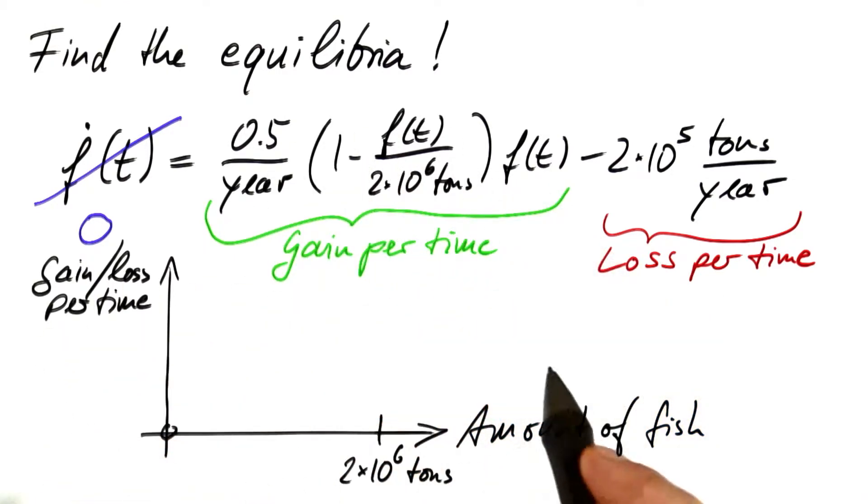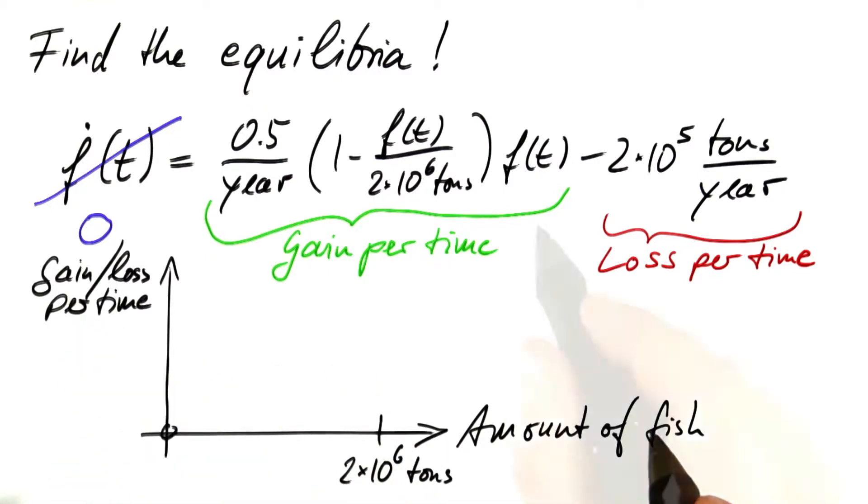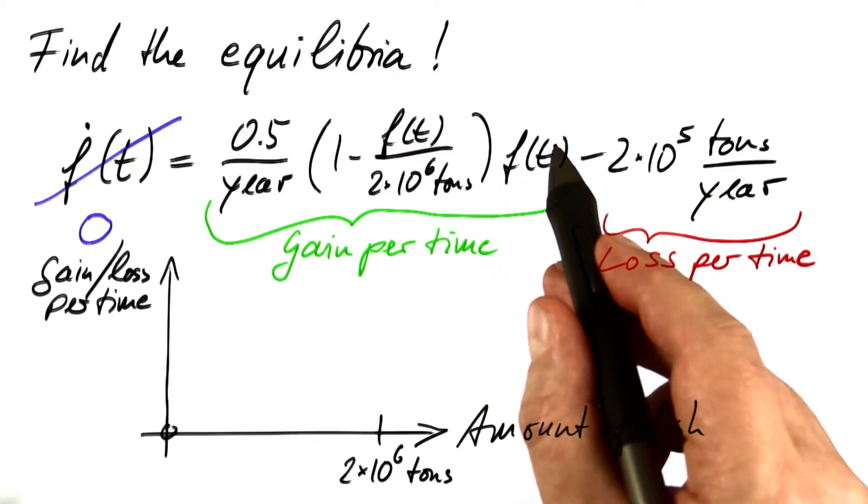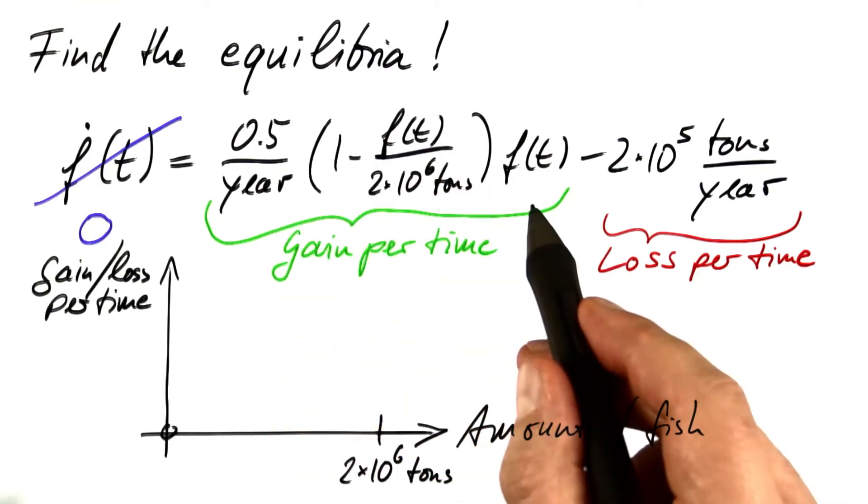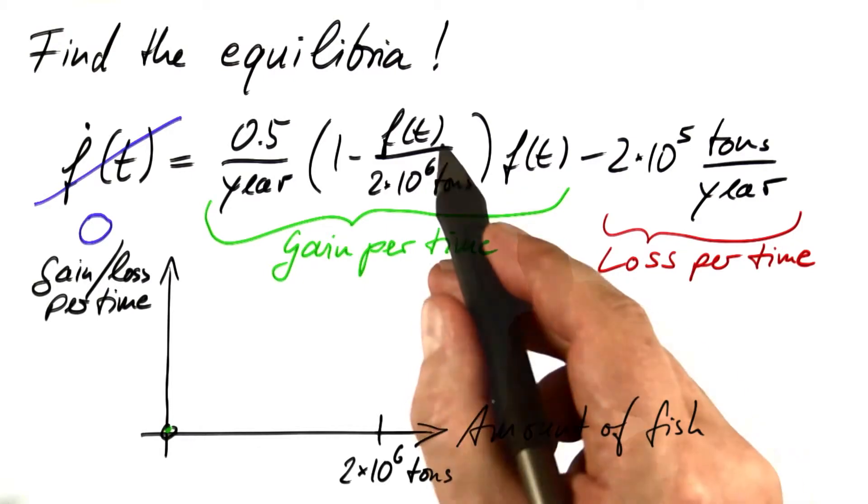Let's build this type of diagram to show how the gain depends on the amount. If you look closely, you see that this has to be a parabola. If the amount of fish is zero, we're multiplying by zero here and the gain will be zero. That's no surprise. When there's no fish, there's no growth. So we know this point.